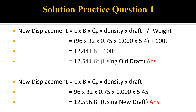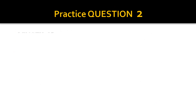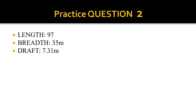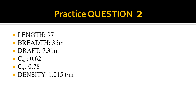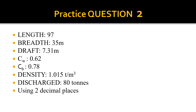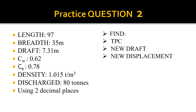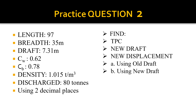Example 2: we have length 97, breadth 35, draft 7.31, water plane coefficient CW 0.62, block coefficient CB 0.78, density 1.015, and the vessel is discharging 80 tons. Again, we are using two decimal places. We are asked to find TPC, new draft, and new displacement using both old draft and new draft methods.